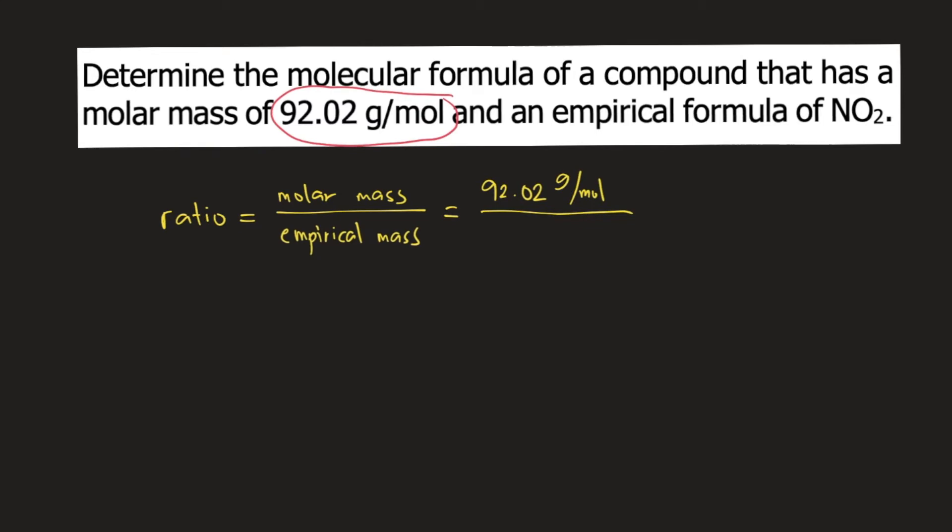The problem also says that the empirical formula is NO2. From the empirical formula, we can solve for the empirical mass. The empirical mass of NO2, or N1O2, is equal to 1 times the molar mass of nitrogen, 14.01 grams per mole,